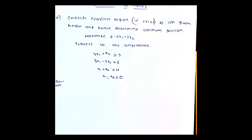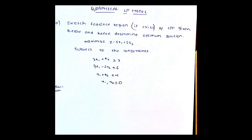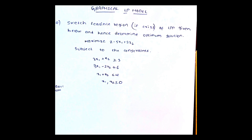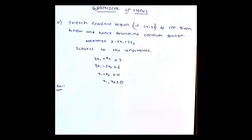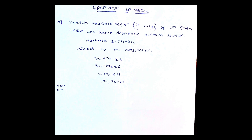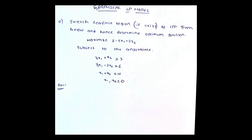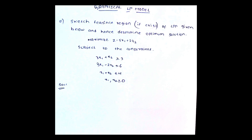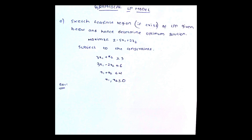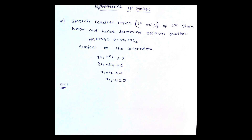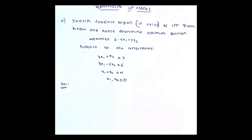The question here is: sketch the feasible region, if it exists, of the LPP — linear programming model — given below, and hence determine the optimum solution. Maximize Z equal to 5x1 plus 2x2, subject to the constraints: 3x1 plus x2 greater than or equal to 3; 3x1 minus 2x2 less than or equal to 6; x1 plus x2 less than or equal to 4; and x1, x2 greater than or equal to 0.